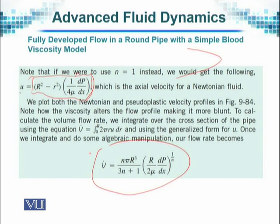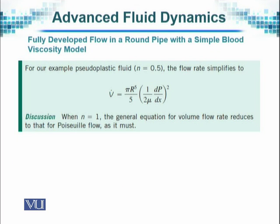The volume flow rate — the rate at which fluid will be flowing — is derived from this formula and turns out to be equal to pi R by 5, times 1 by 2 mu, times the pressure gradient dP/dx squared, as written here. When N is equal to 1, the general equation for the volume flow rate reduces to that of Poiseuille's flow.